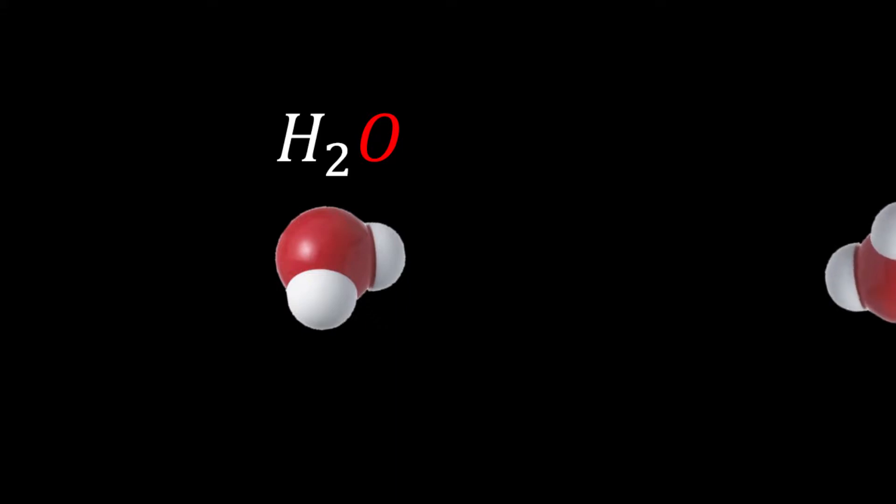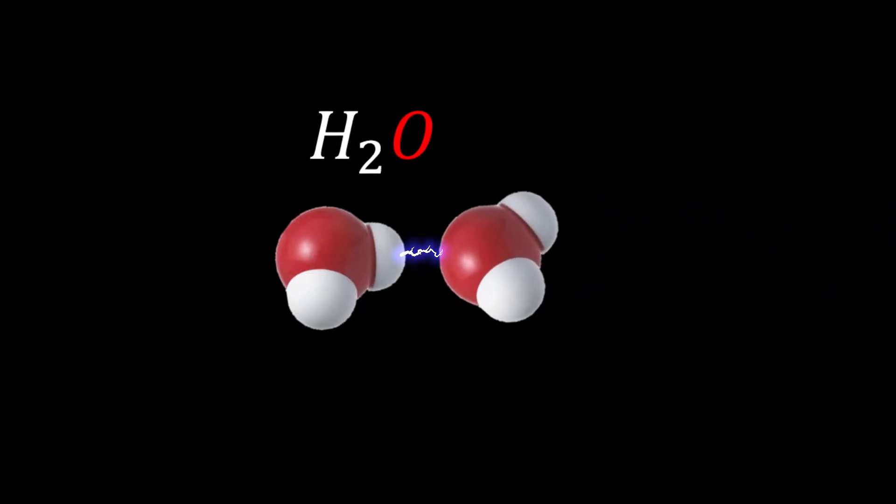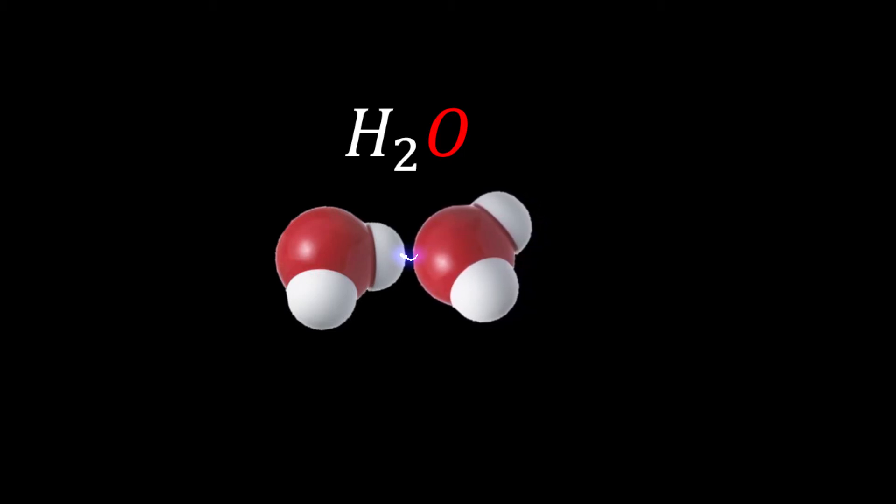When two of these molecules approach each other, the significant difference in polarity encourages a strong intermolecular bond. And because the hydrogen atom is so small and electron-deficient, it approaches the highly electronegative N, O, and F atoms very closely, ensuring an abnormally strong bond.